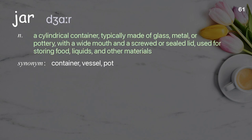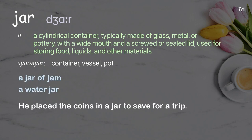Jar: a cylindrical container, typically made of glass, metal, or pottery, with a wide mouth and a screwed or sealed lid, used for storing food, liquids, and other materials. Examples: a jar of jam, a water jar. He placed the coins in a jar to save for a trip.